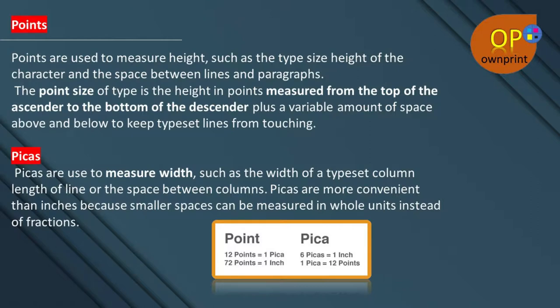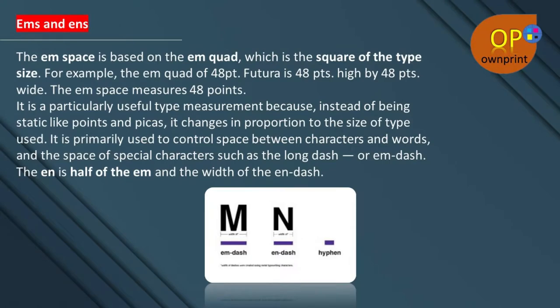Picas are used to measure width, such as the width of a typeset column, length of a line, or the space between columns. Picas are more convenient than inches because smaller spaces can be measured in whole units instead of fractions. The next units are ems and ens.